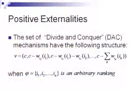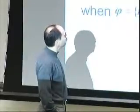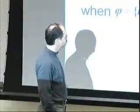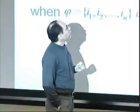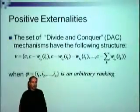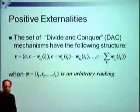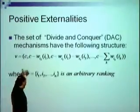I'm going to start with positive externalities. The first thing to note — which comes up in a related paper of mine — is that the optimal mechanism must be of a sort I call 'divide and conquer.' Here is how the optimal mechanism looks. The principle selects some ordering of agents. With all positive externalities, he wants to maximize extraction rather than minimize payment.